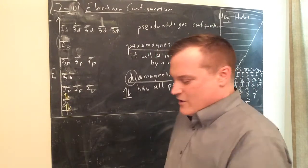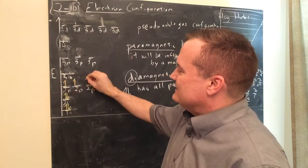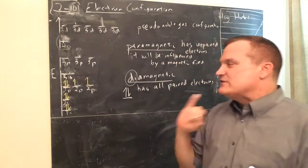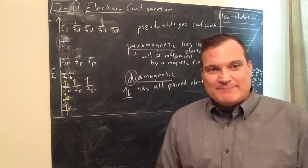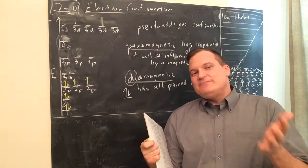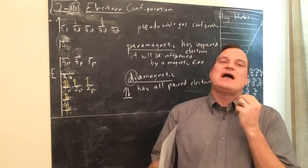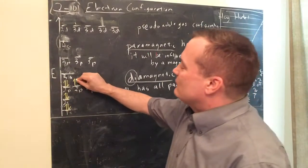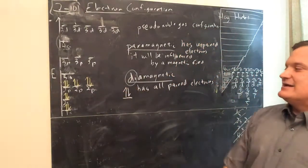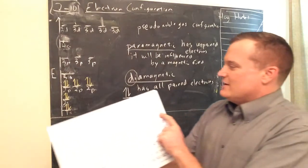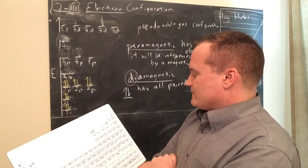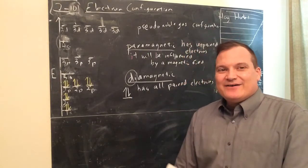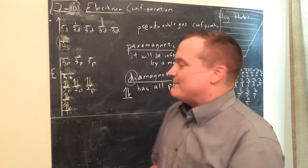Lithium has three electrons — paramagnetic. Beryllium — diamagnetic, all orbitals have pairs. Boron, carbon, nitrogen — all magnetic, paramagnetic. If you have even one unpaired electron, the element will be influenced by a magnetic field. The more unpaired electrons you have, the more strongly magnetic it is. Neon — 1s² 2s² 2p⁶ — all paired, so diamagnetic. All noble gases will be diamagnetic.